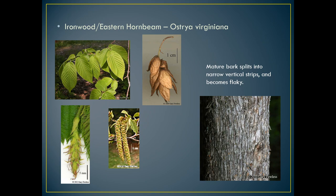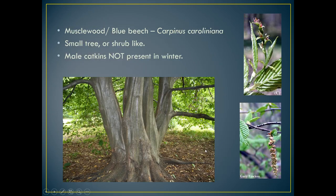Moving on to the ironwood, also called the eastern hornbeam — the scientific name is Ostrya virginiana. Again they have alternate, toothed leaves with male and female catkins. The mature fruits appear within capsules after the female catkin is fertilized and develops. A main distinguishing factor for the ironwood is the bark — a mature bark presents in vertical strips that become flaky, whereas birch bark is usually white and papery.